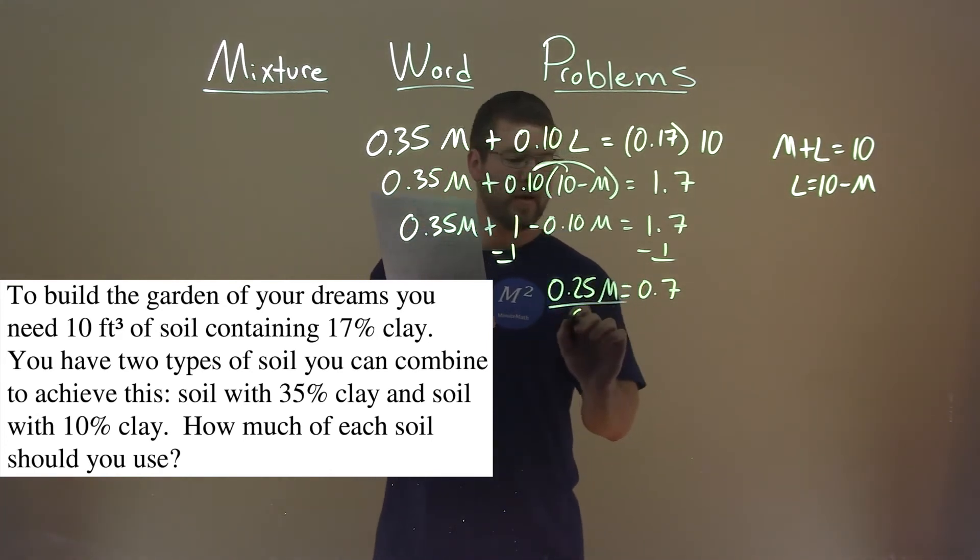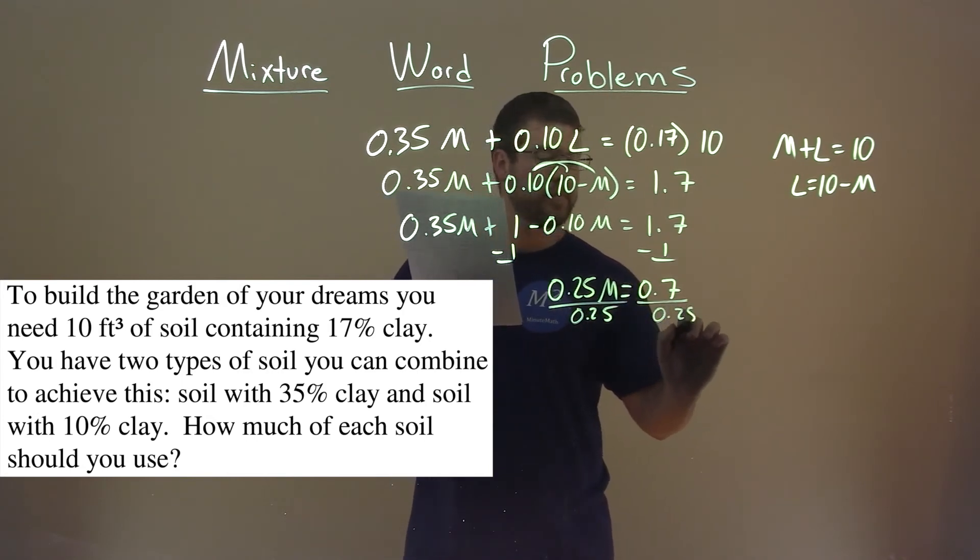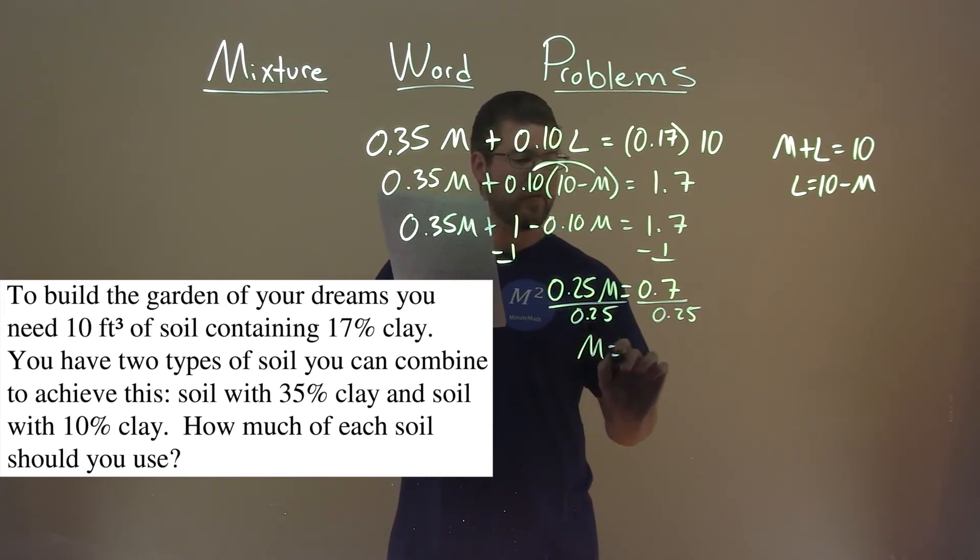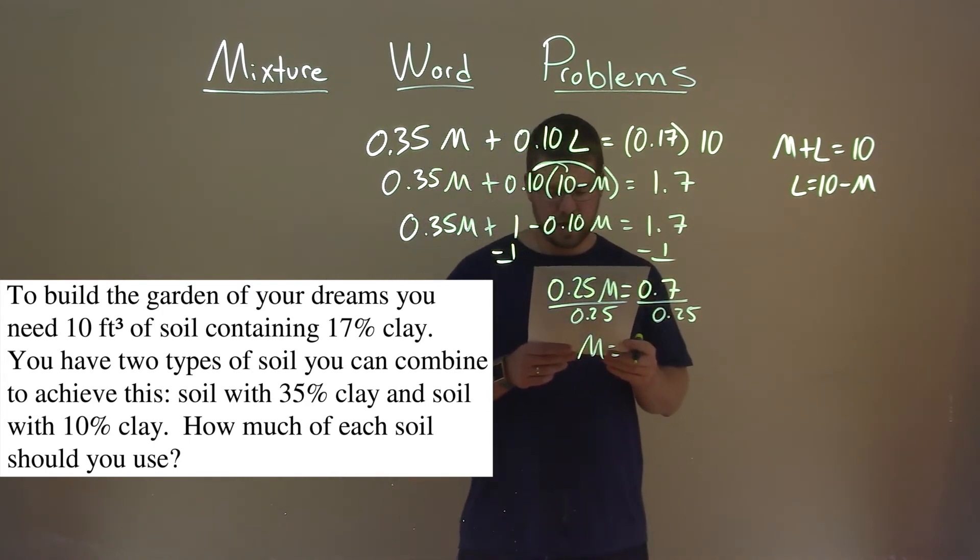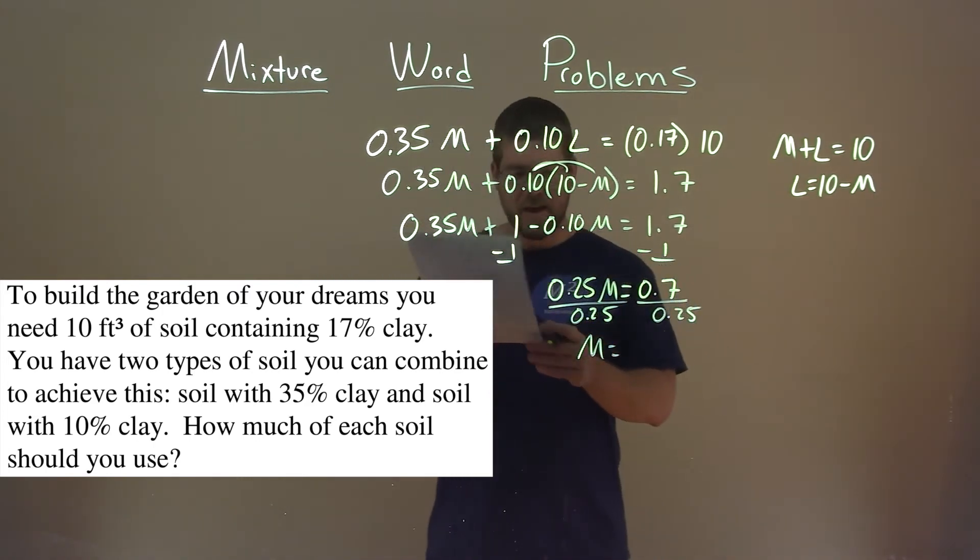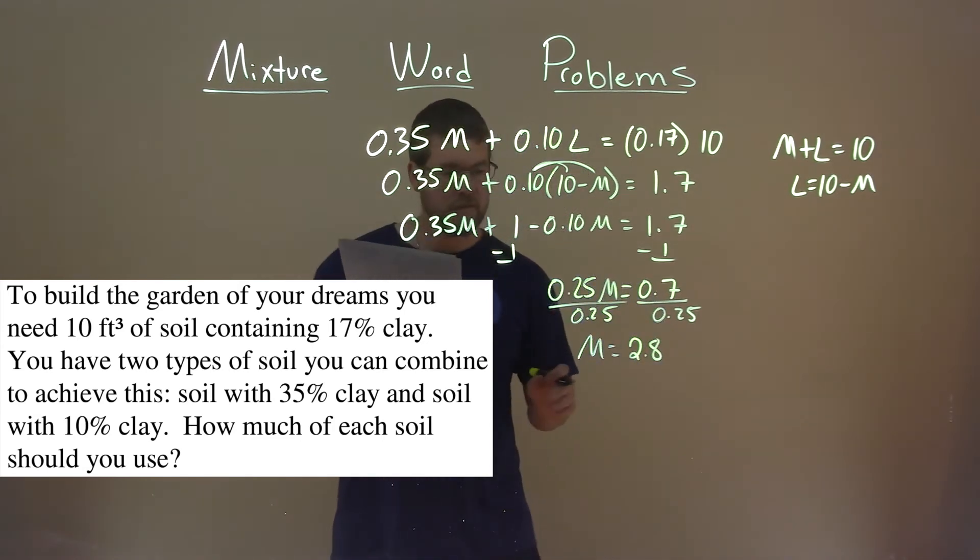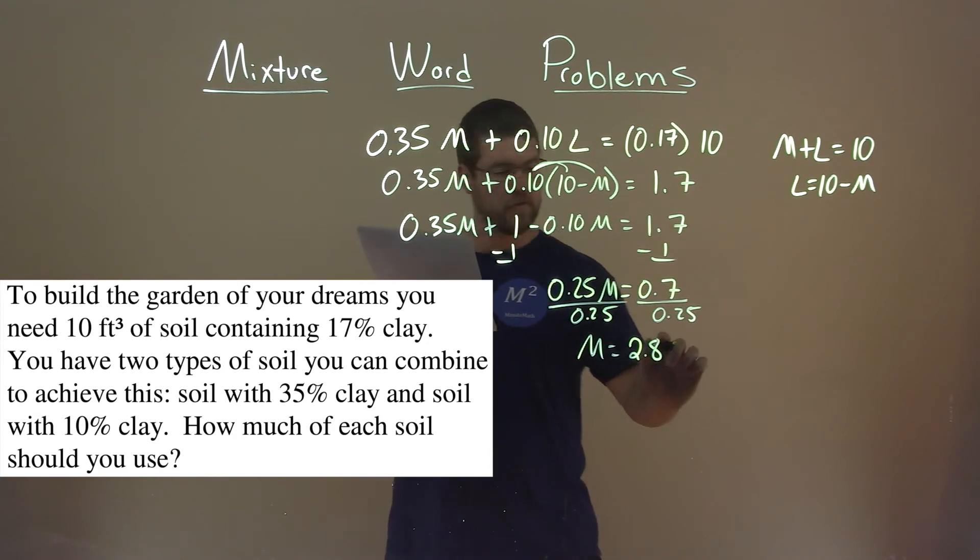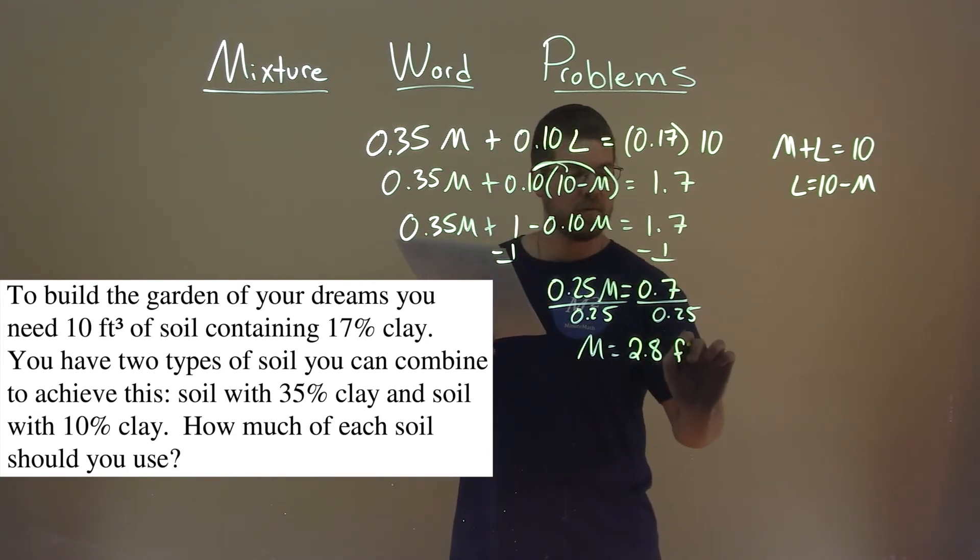Divide both sides by 0.25. And we have M by itself here, and 0.7 divided by 0.25, and that comes out to be 2.8. So this is the more mixture, right? So it's 2.8 feet cubed with 35% clay.